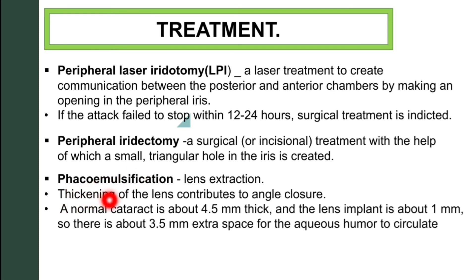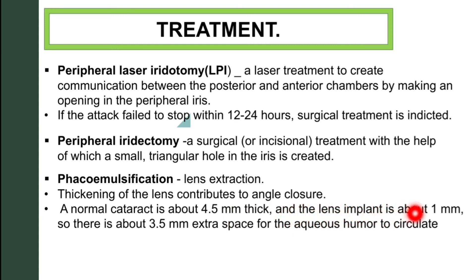Thickening of the lens contributes to angle closure. A normal cataract is about 4.5 mm thick and the lens implant is about 1 mm, so there is approximately 3.5 mm of extra space for aqueous humor to circulate.